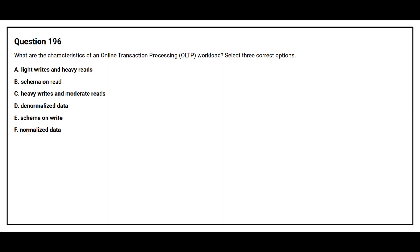Question number 196. What are the characteristics of an online transaction processing (OLTP) workload? Select three correct options. Option A: Light writes and heavy reads. Option B: Schema on read. Option C: Heavy writes and moderate reads. Option D: Denormalized data. Option E: Schema on write. Option F: Normalized data.